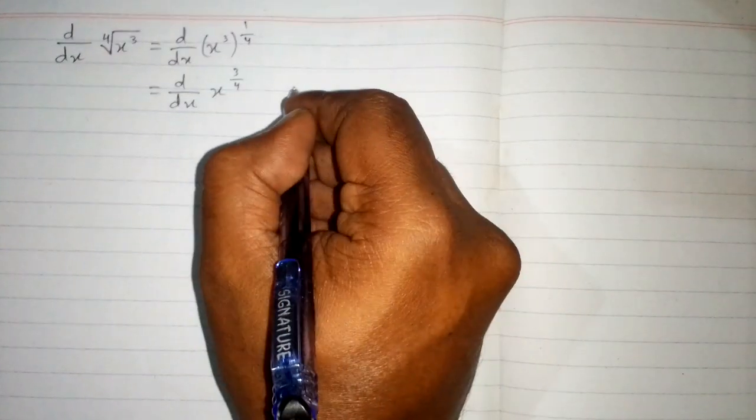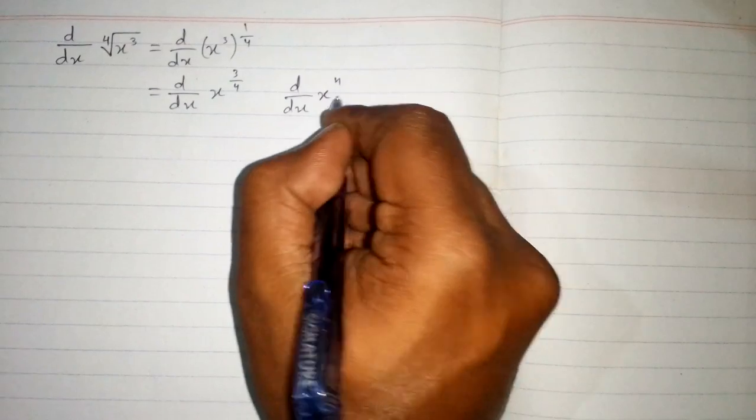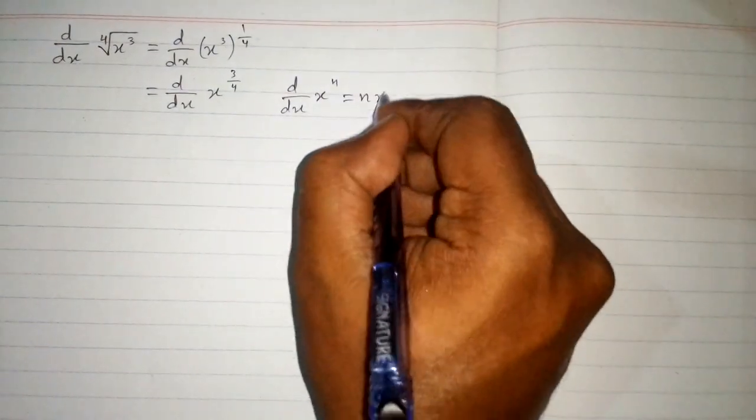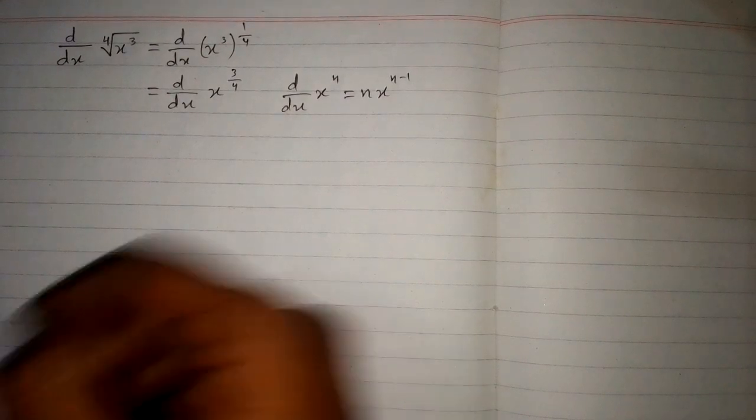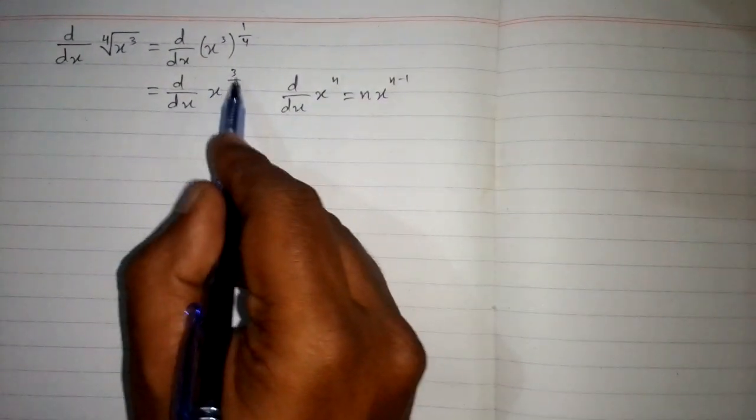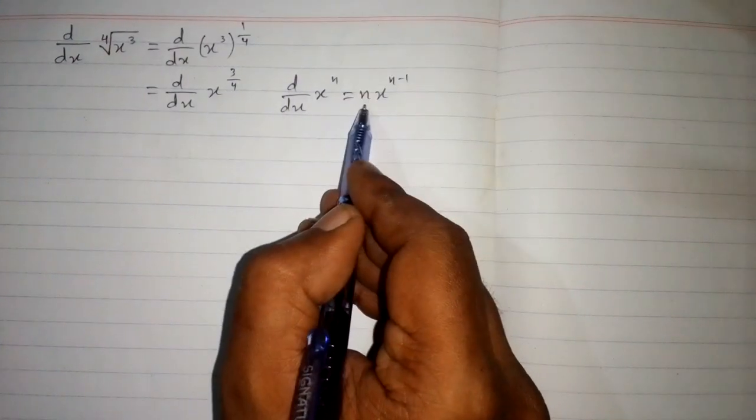Now we apply the power rule of differentiation, which states d/dx of x^n equals n times x^(n-1). Here we have 3/4 in place of n, so we substitute 3/4 into the formula.